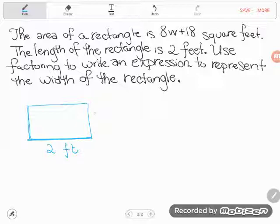We don't know its width, and we want to write an expression to represent the width, but we know something super interesting, we know its area. According to this problem, the area of our rectangle is 8w plus 18.